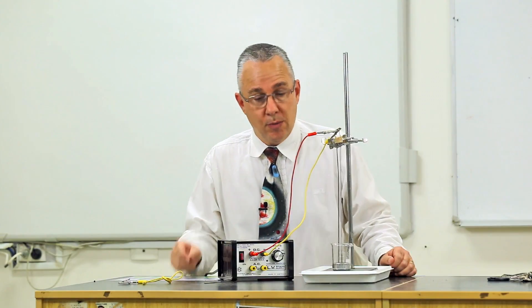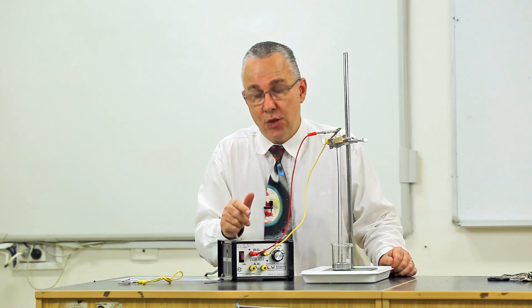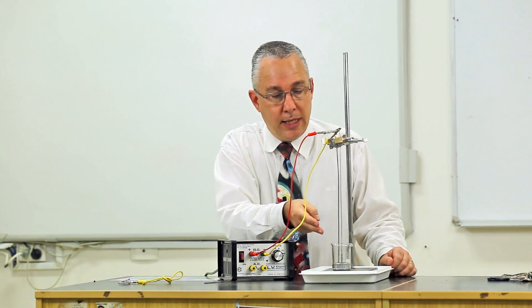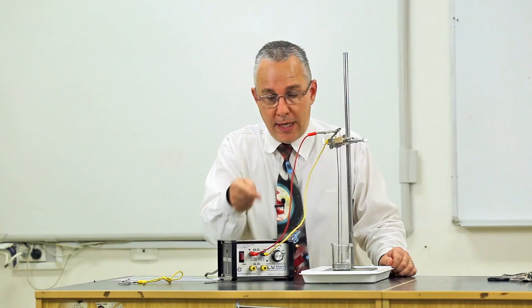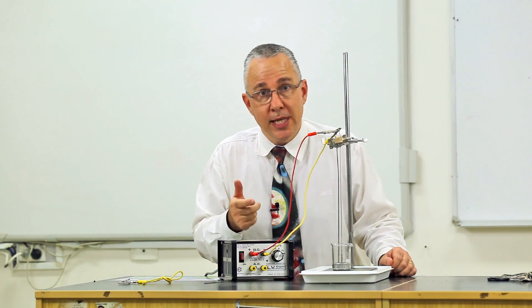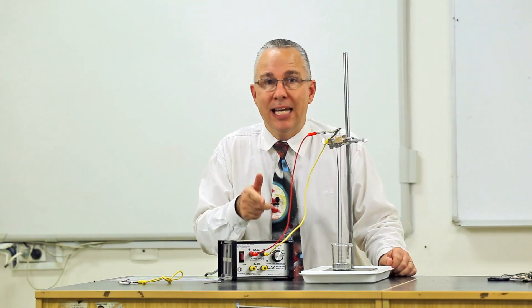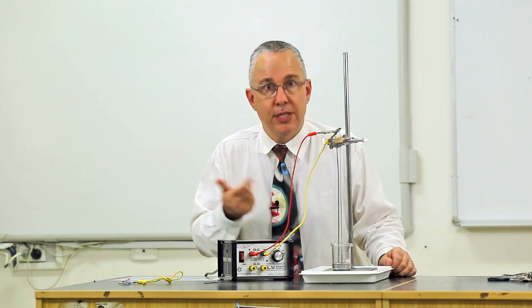In this situation what I've done is I've patched it in such a way the current leaves the red terminal over here, goes down one wire through the mercury, back up the wire and back to the negative terminal. So in this case what we have is two current bearing wires but now the currents are in opposite directions. Let's see what happens.